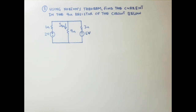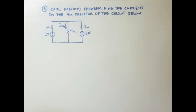In this video, we are going to solve applied electricity, MESEM 2010, question 7. Using Norton's theorem, we are to find the current in the 4 ohm resistor of the circuit below.